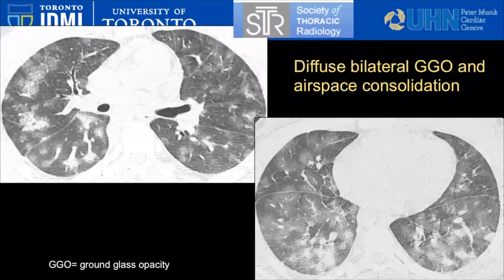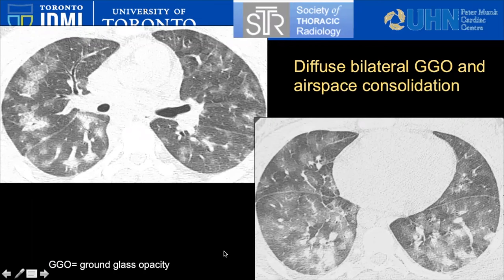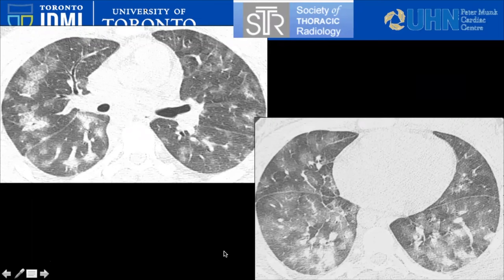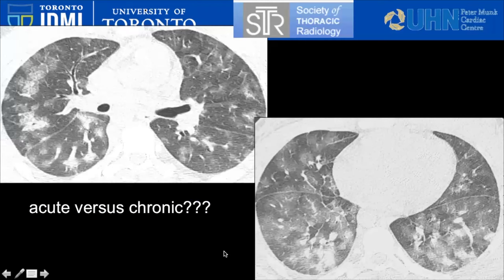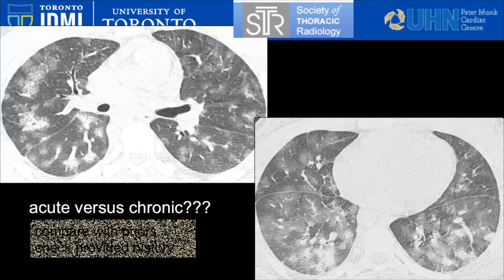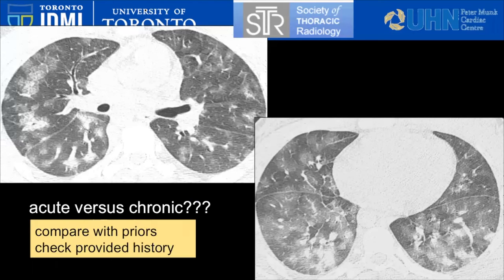Let's look at this first case. There's diffuse bilateral ground glass opacity and airspace consolidation, as well as some scattered interlobular septal lines in the right lung. How do we approach this case? I find it very helpful to decide if it's an acute or chronic process. Compare with priors if available, check the provided history. You may have to go into the electronic patient record or talk to the requesting physician.